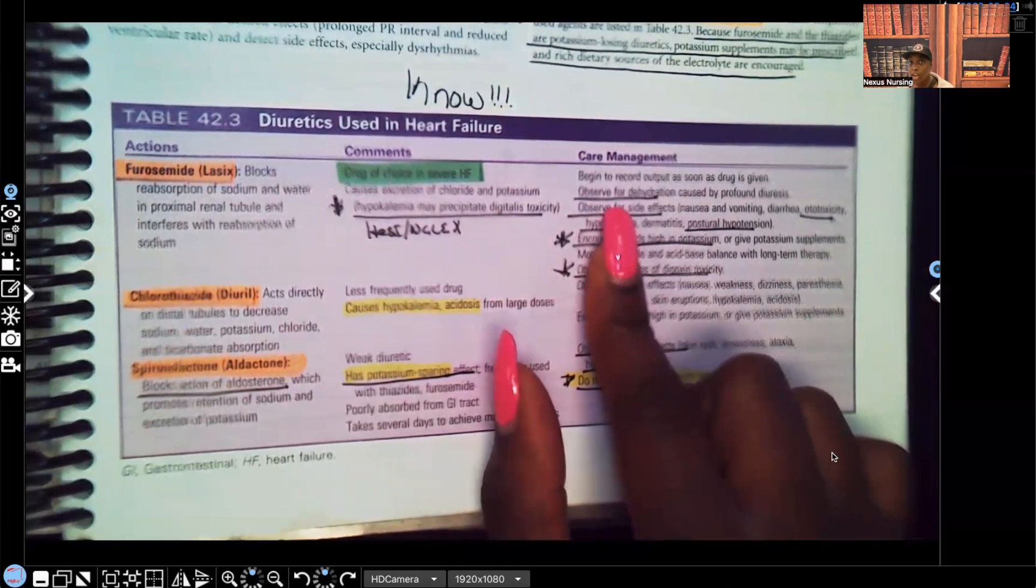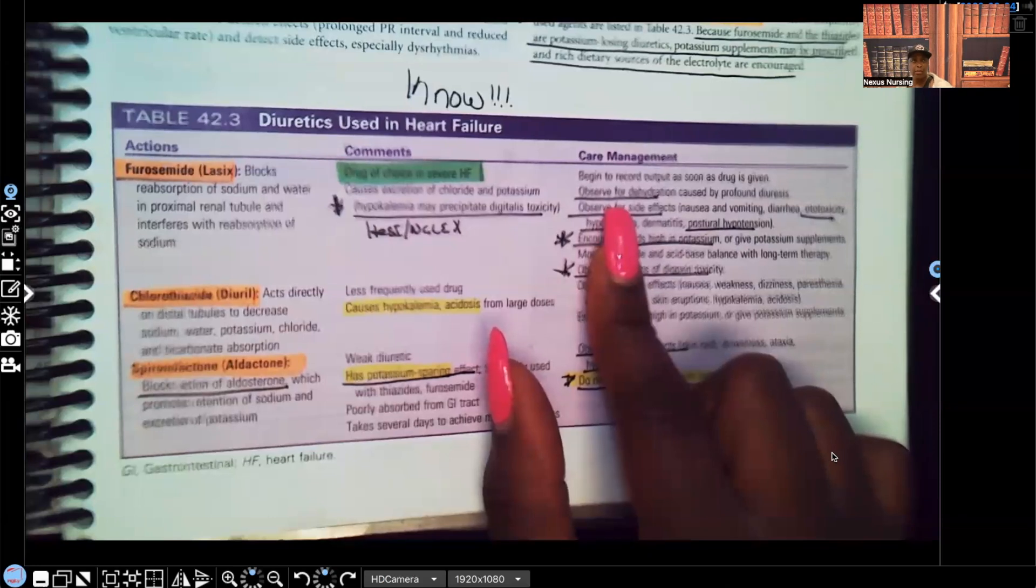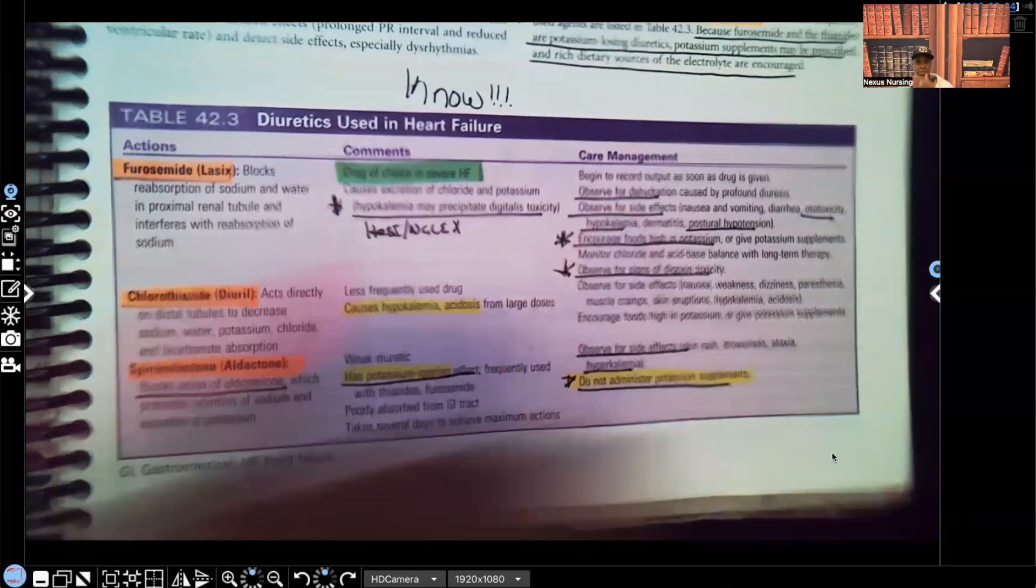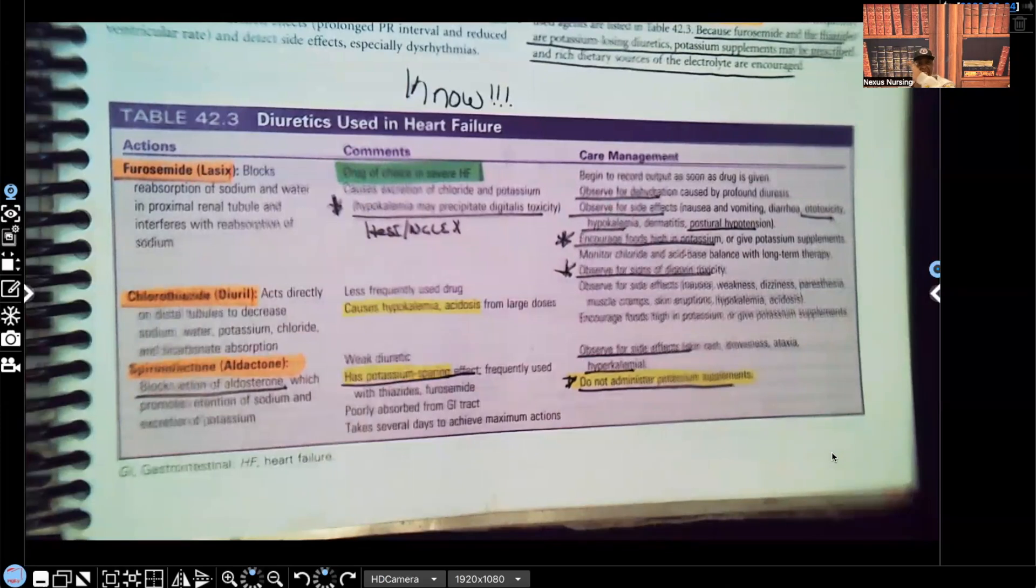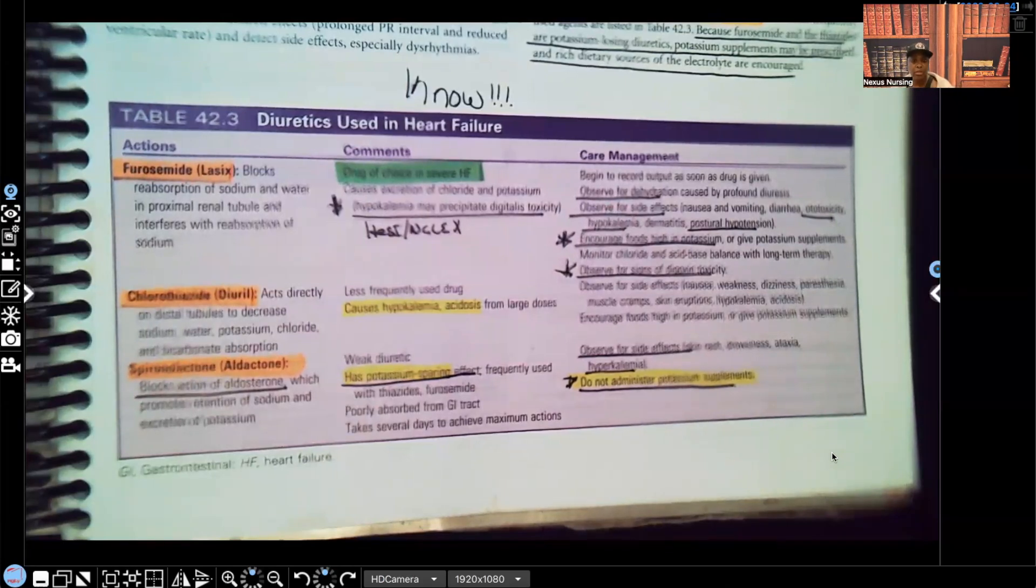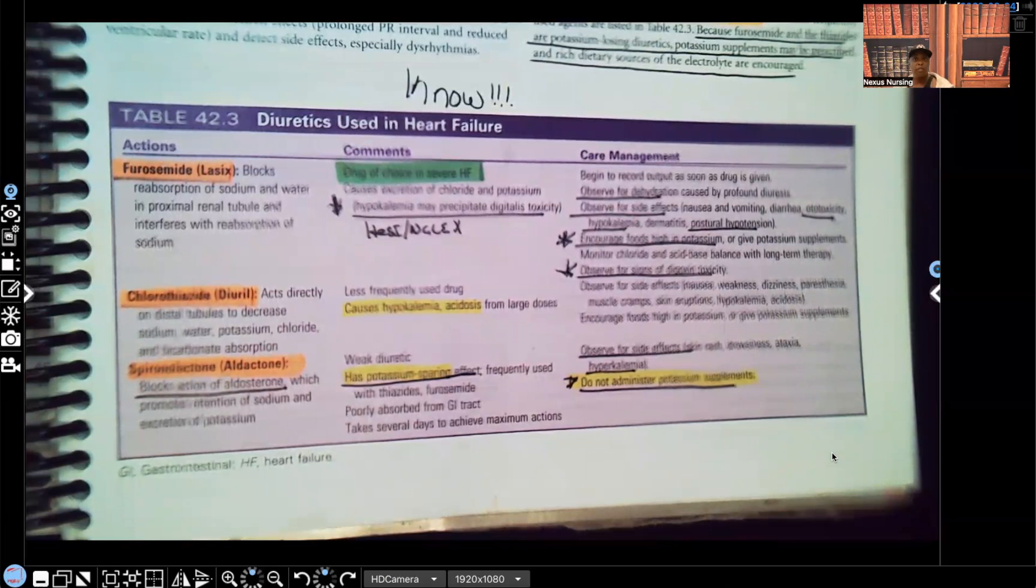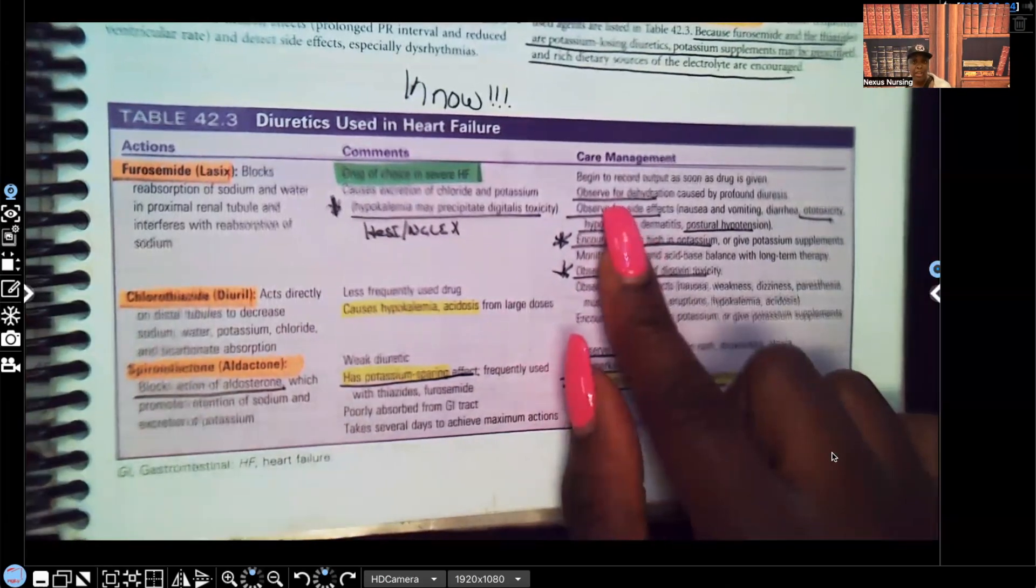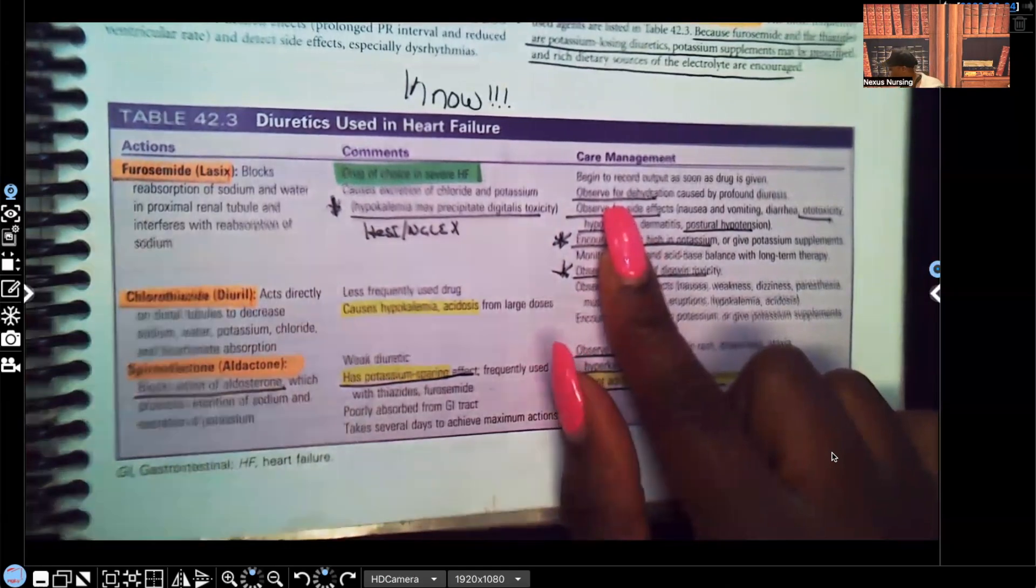And last time I checked, fluid and electrolytes, isn't that a priority when it comes to physiological integrity? Remember Maslow's hierarchy of needs, you have that pyramid and everything on the bottom is what's most important that falls under physiological integrity. Fluid electrolytes, nutrition, sleep, rest, vital signs, hemodynamic status - all of those things fall under physiological integrity. What's keeping that patient alive? So watching out for dehydration, that's huge.